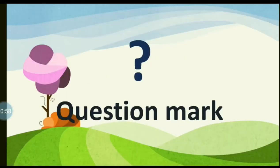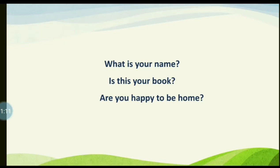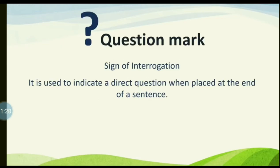Now we move on to the question mark. Examples: 'What is your name?' 'Is this your book?' 'Are you happy to be home?' All of these are direct questions, so we put a question mark. A question mark is also known as the sign of interrogation — it is used to indicate a direct question when placed at the end of a sentence.